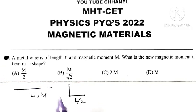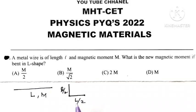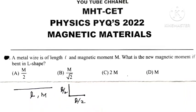The length of each side is L by 2 and L by 2, so each small side is L by 2 and the total length is small L.